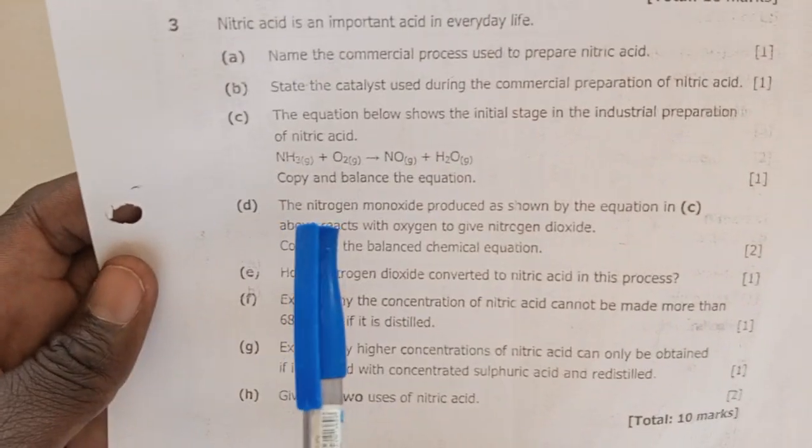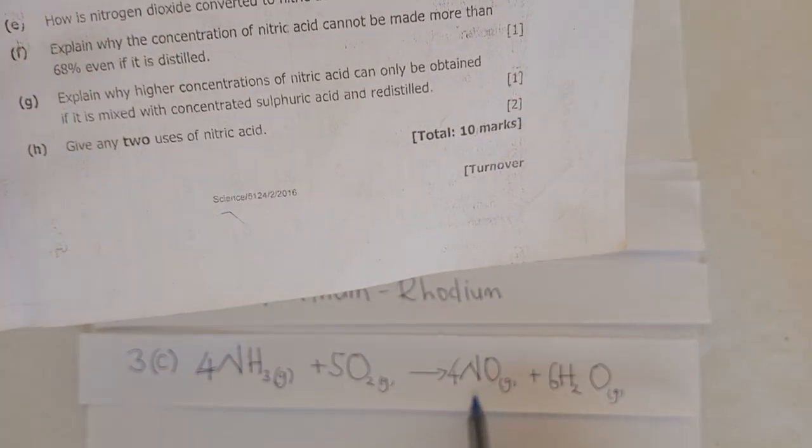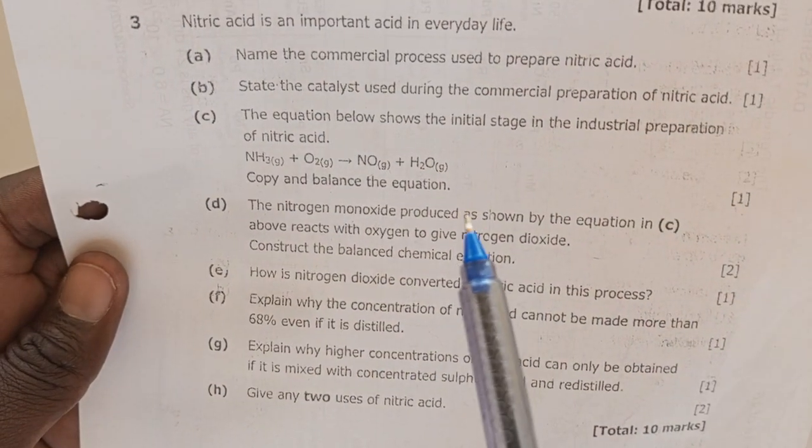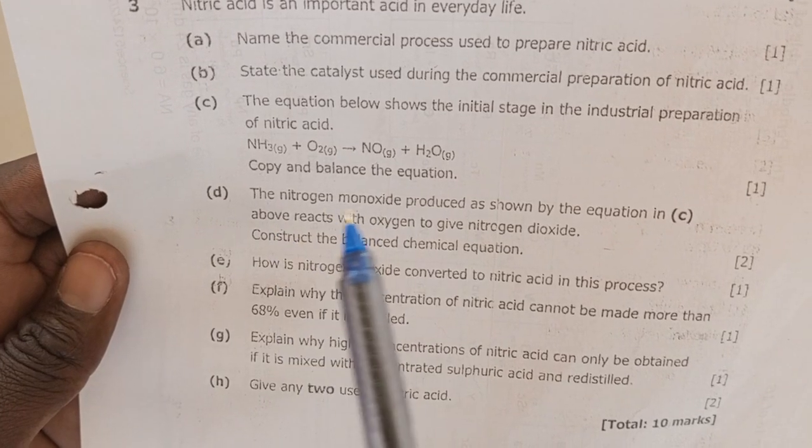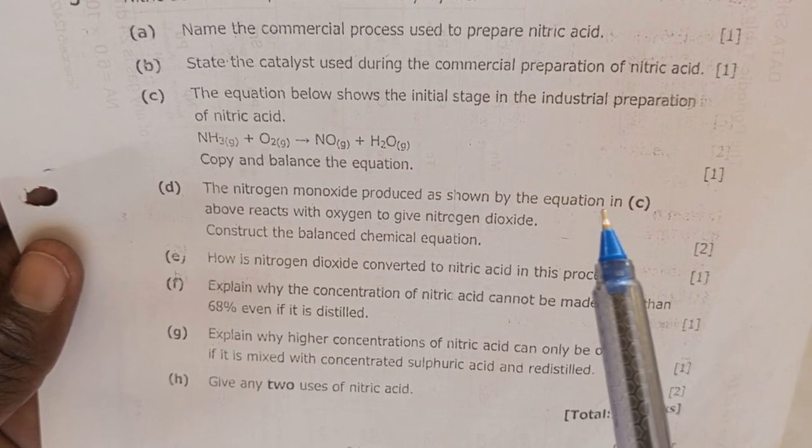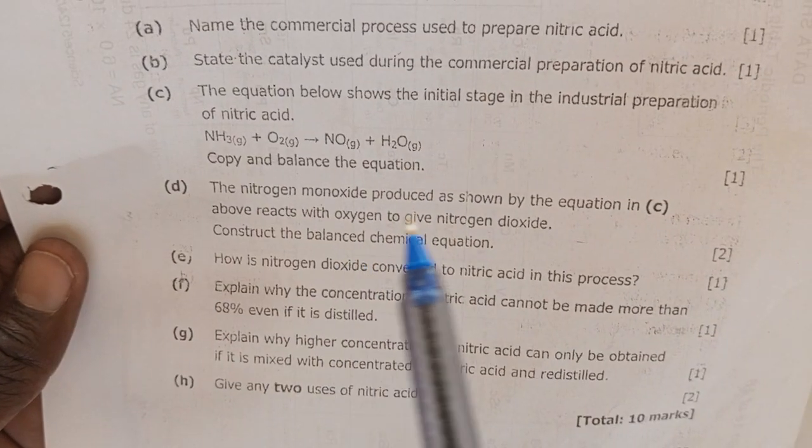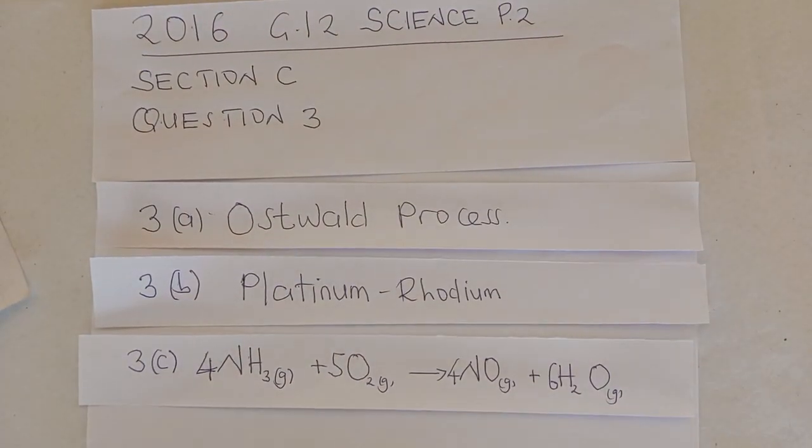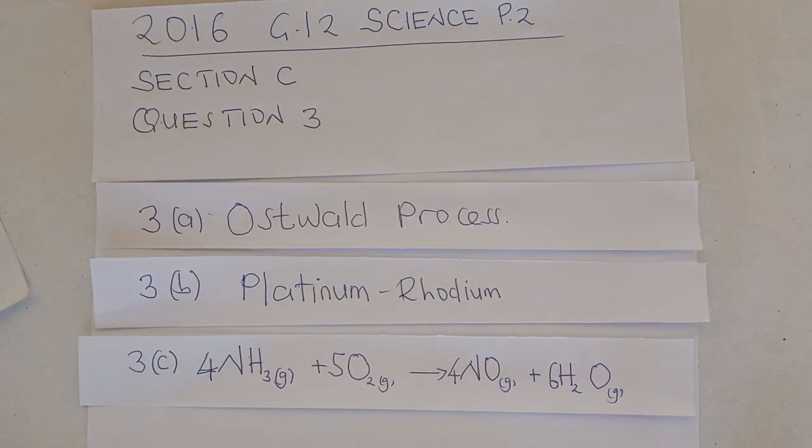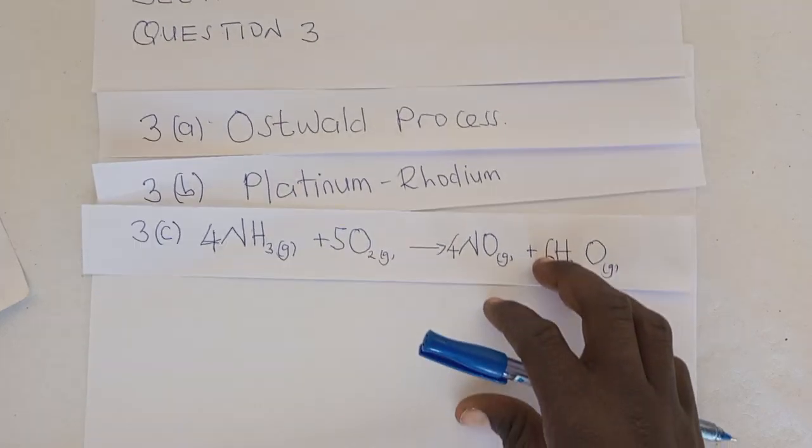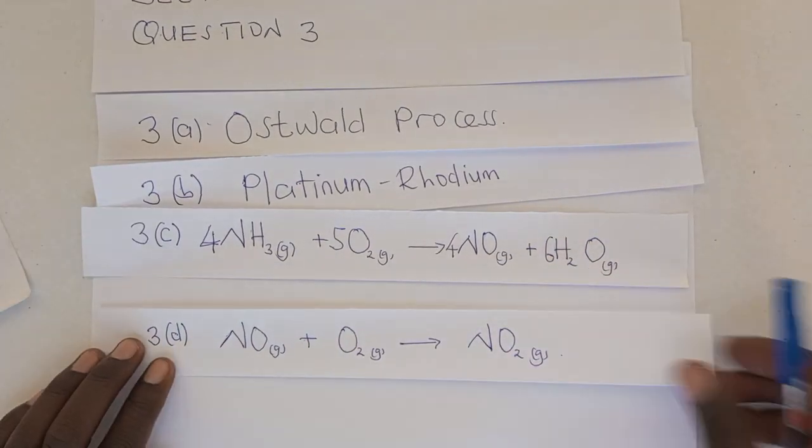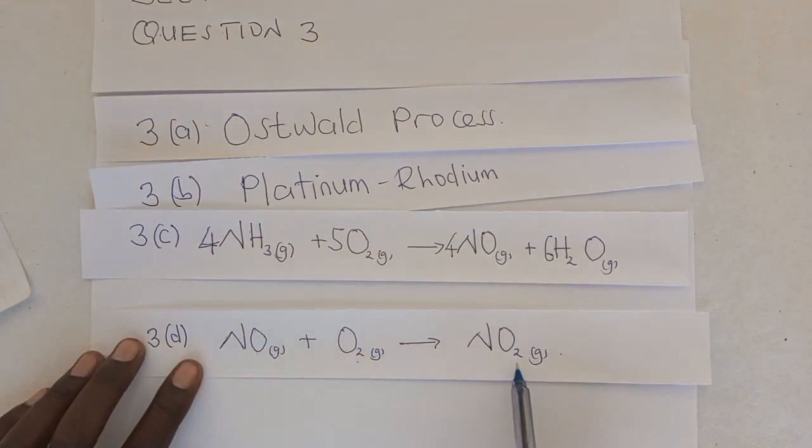Can we move on to question D. Question D reads: the nitrogen monoxide produced as shown by the equation in C above reacts with oxygen to give nitrogen dioxide. Construct a balanced chemical equation. So from the nitrogen monoxide that has been produced in the reaction, we now have to write the equation which involves the conversion of nitrogen monoxide to nitrogen dioxide. And the equation is basically written as follows. This is the equation: nitrogen monoxide plus oxygen to give us nitrogen dioxide.